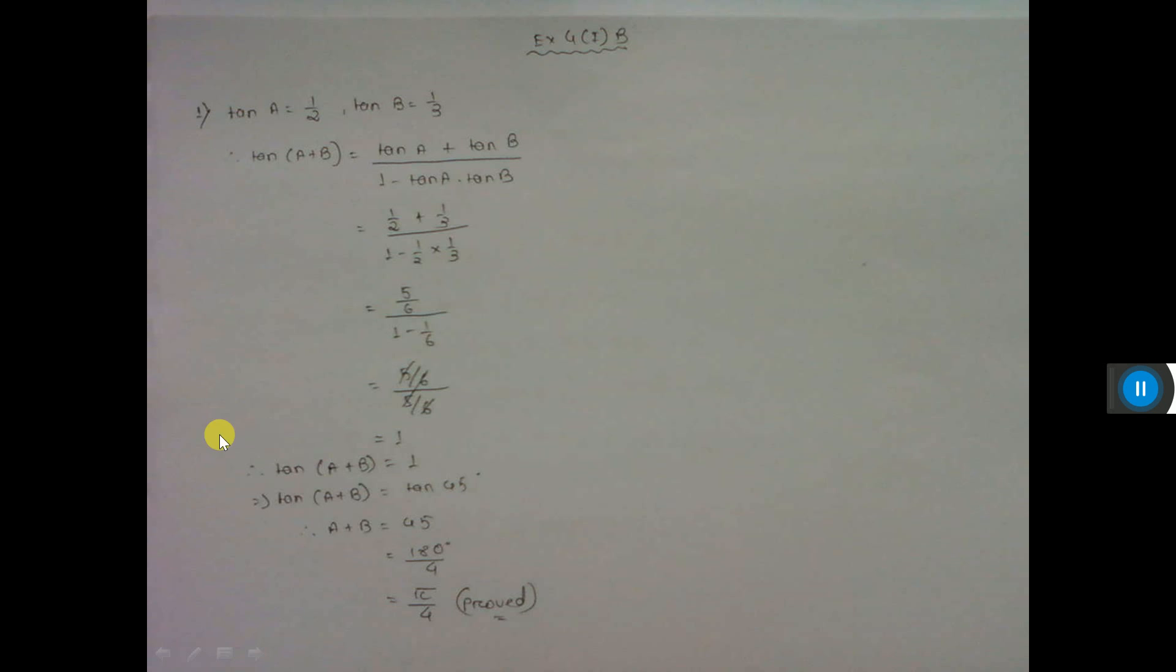Sum number 1: we have to find the value of tan(a + b) where tan a equals half, tan b equals 1/3. Now we know tan(a + b) formula: tan a plus tan b by 1 minus tan a tan b. So I break it down. Tan a value is given 1/2, so put that value. Tan b is given 1/3, so put that value also. Then here do LCM, here also do LCM.